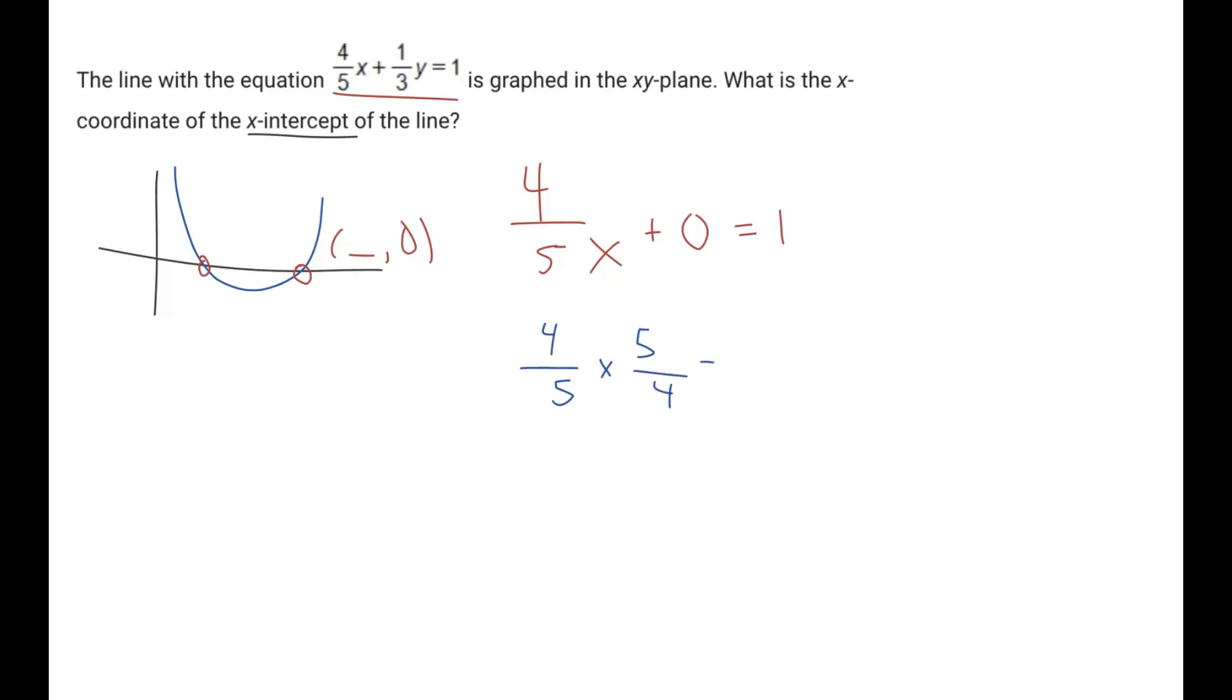Because this gives us 20 on top and 20 on the bottom, and that is equivalent to 1. Therefore, the x-coordinate of the x-intercept is 5/4. That is our answer.